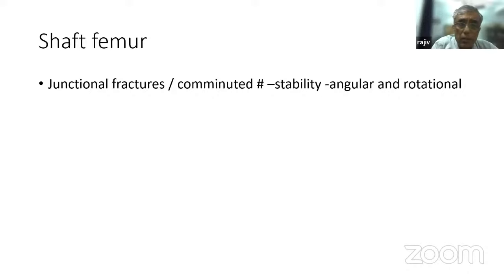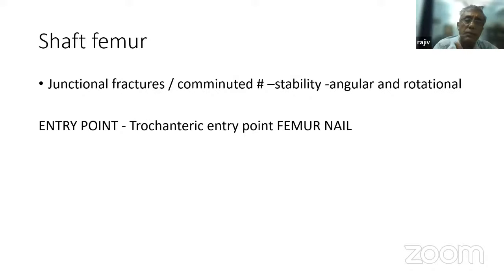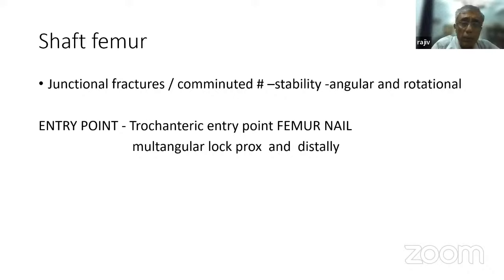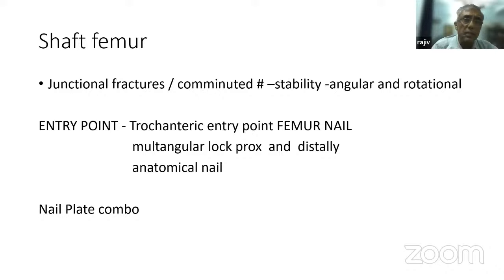For subtrochanteric fractures, the problem has always been union because maintaining valgus is the biggest biomechanical challenge. The most recent answers are the anatomical trochanteric plates, long TFN, long InterTAN, and the angle blade plate — which unfortunately has slowly died out, but I feel is one of the best implants that could have stood the test of time. For shaft femur fractures, the real challenges are junctional and comminuted fractures where angular and rotational stability are lacking. The entry point has been shifting from the piriform fossa toward the medial part of the trochanter, which is more anatomical, with multangular locking proximally and distally giving better hold.